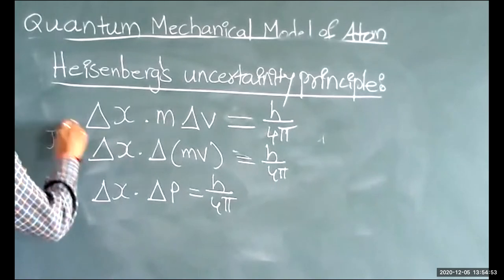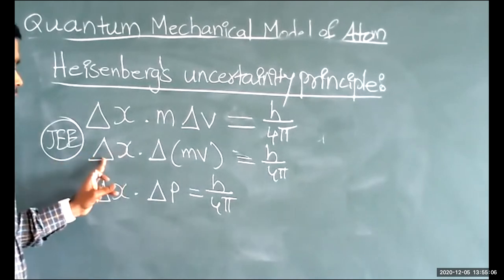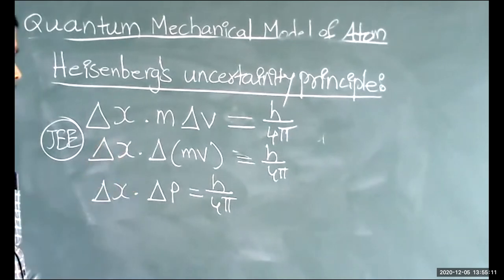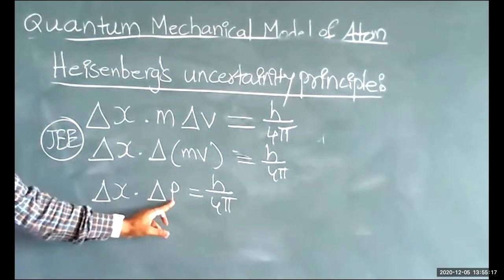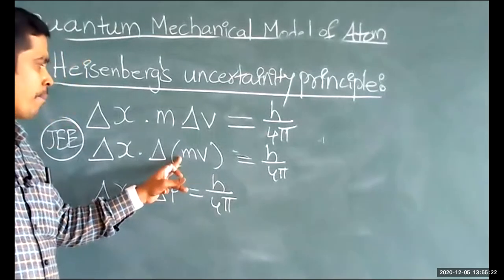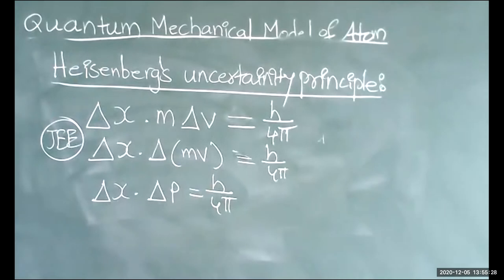Questions and MCQs based on these formulas will be asked for JEE. Delta x means uncertainty in the position of the electron, delta v means uncertainty in the velocity of the electron, delta p means uncertainty in the momentum of the electron, m means mass of electron, and h means Planck's constant.